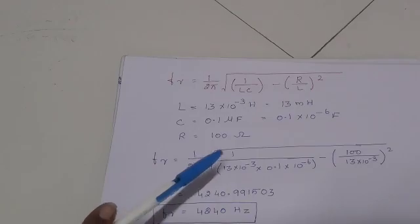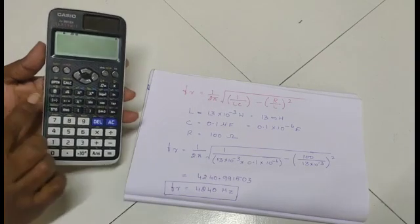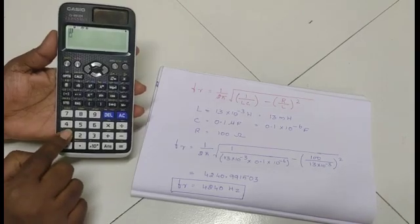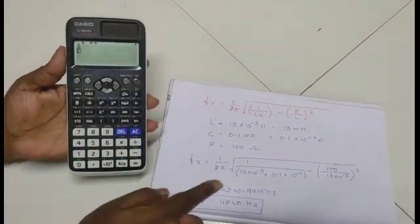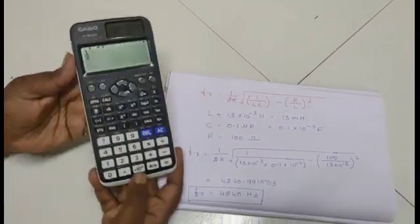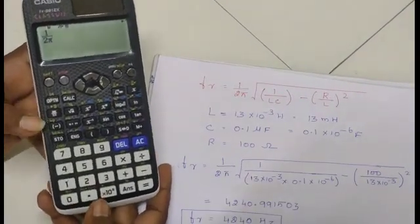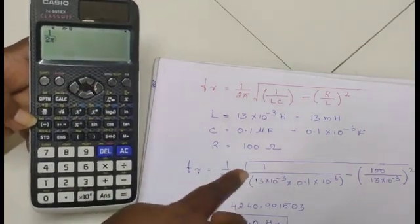Now, we are going to use the calculator to calculate 1 by 2 pi. Press this button, numerator and denominator. In numerator, we have 1, come down for 2 pi, 2 and then pi symbol, shift of this one, we will get the pi symbol.